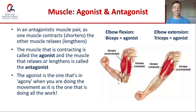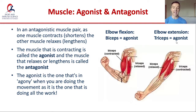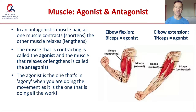In elbow flexion, the biceps is the agonist — it's contracting to flex the elbow, and as it contracts the tricep relaxes. Then in elbow extension when we straighten it back out, those roles are reversed: the triceps is now the agonist, contracting and shortening, pulling on the bones of the forearm to extend the elbow. As the bicep contracts and shortens, it also pulls on the bones of the forearm to flex it. So we've got muscles contracting, creating a pull on a bone at a joint to create movement.